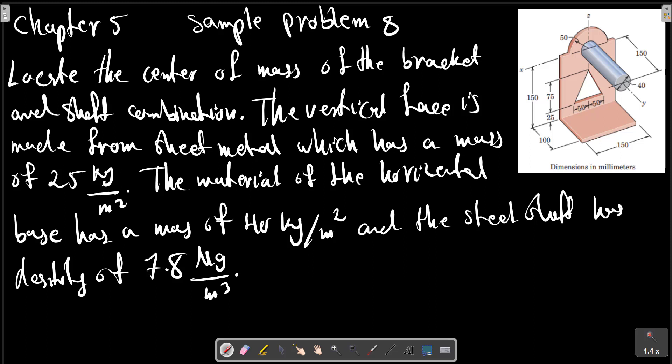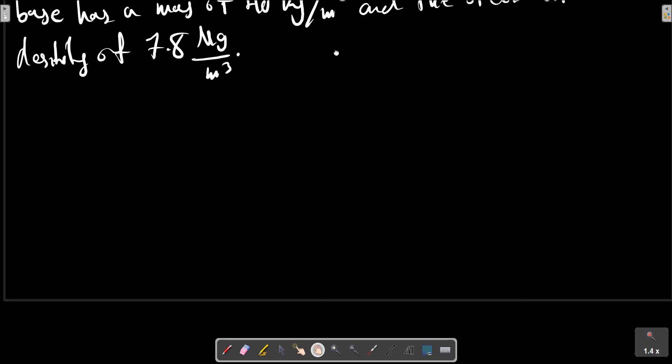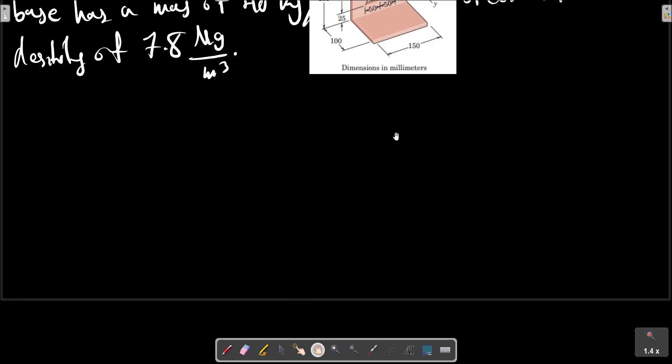Locate the center of mass of the bracket and shaft combination. The vertical face is made from sheet metal which has a mass of 25 kg per meter squared. The material of the horizontal base has a mass of 40 kg per meter squared. The steel shaft has a density of 7.83 Mg per meter cubed. Consider this picture for dimensions.